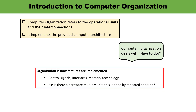Organization is actually about the features which are implemented, like control signals, interfaces, and memory technology. For example, if there is a hardware function to multiply, how the repeated addition is being done — that is the task which is utilized by the organization when it has been implemented.